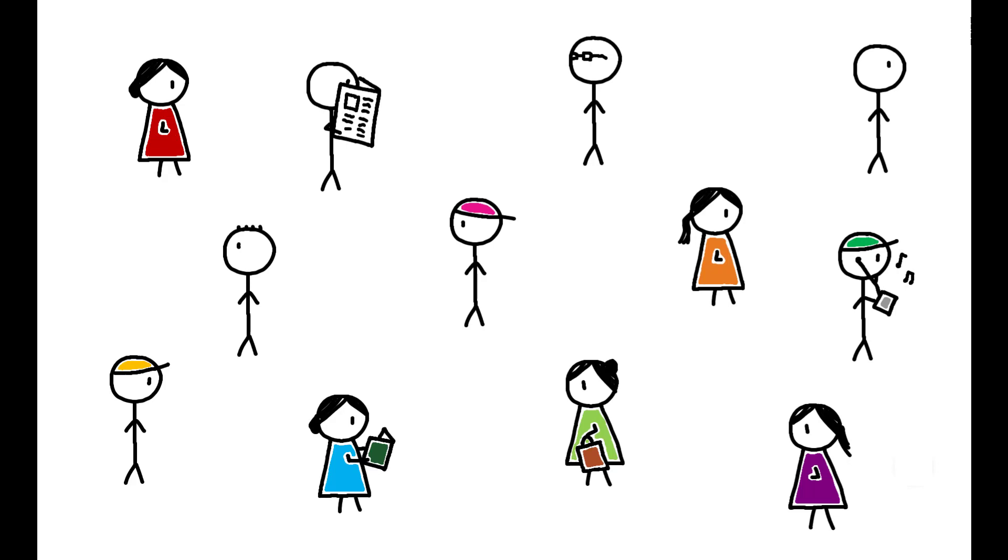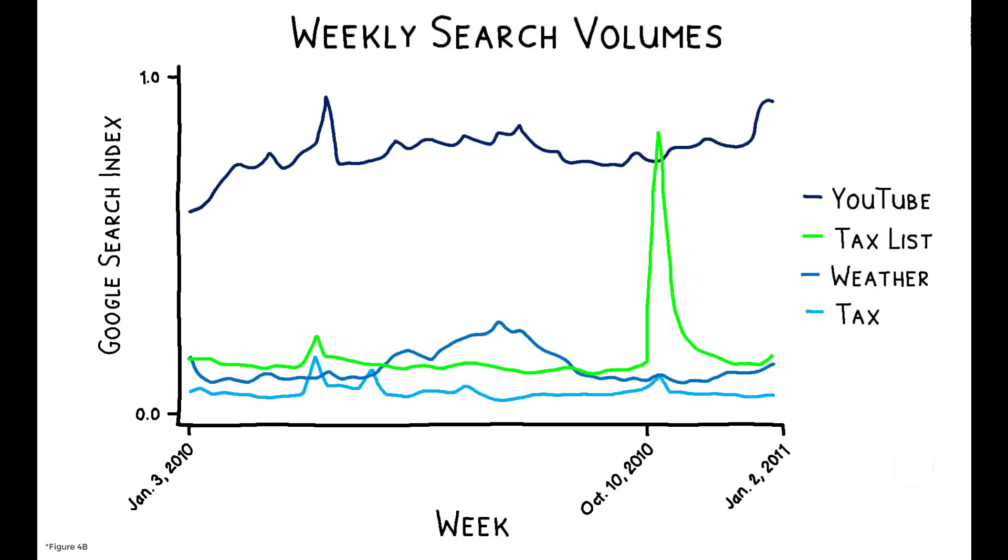And the opportunity was not wasted. Surveys indicate that at least 40% of Norwegians used the online search tools. Data from 2010 show that Google searches for the tax lists are especially elevated, even surpassing searches for YouTube, in the third week of October, when the tax lists are updated with new data from the previous year.